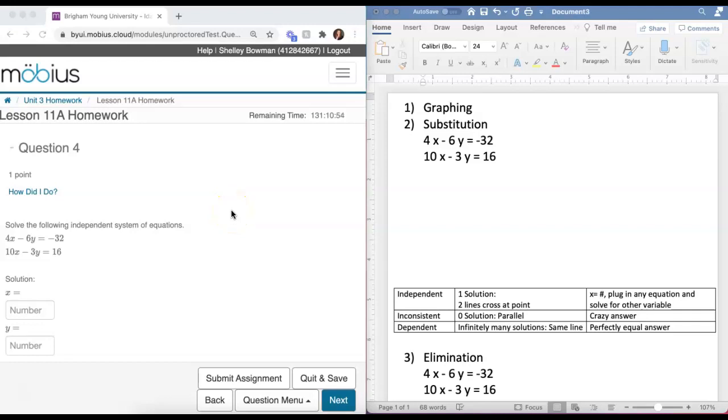This video is for Mobius Lesson 11a, homework question number 4. Solve the following independent system of equations: 4x minus 6y equals negative 32, and 10x minus 3y equals 16.